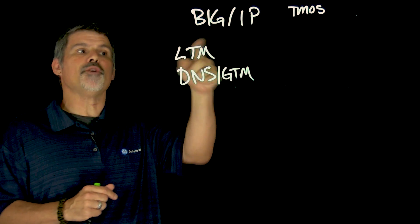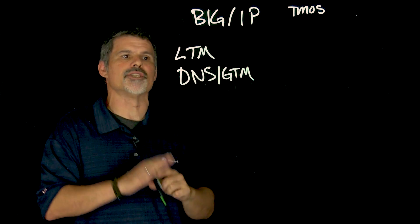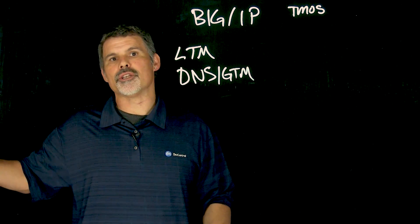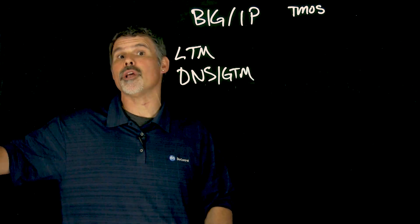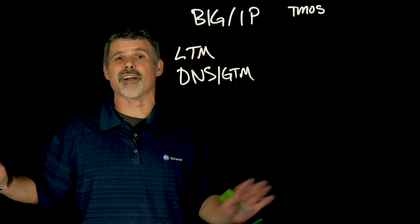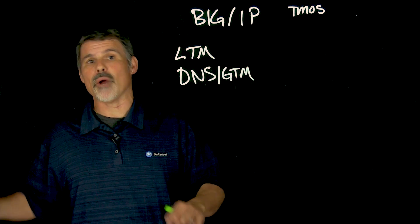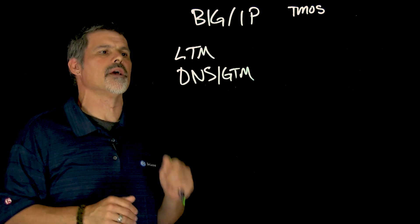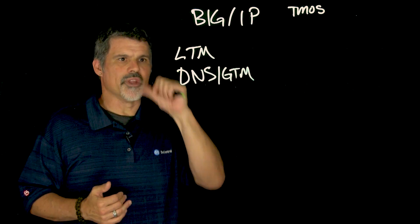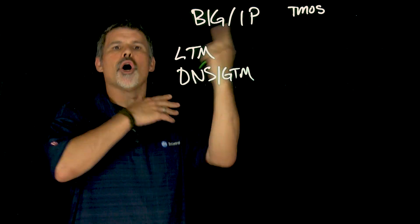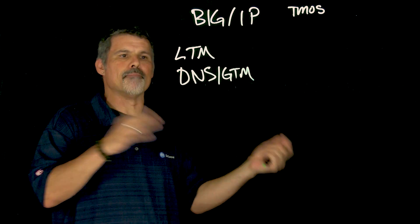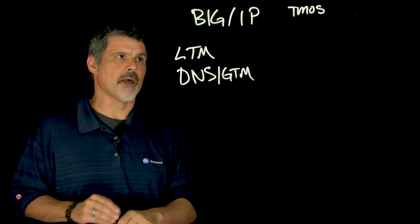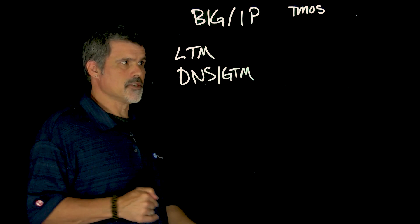DNS also communicates with LTM — they work in conjunction. LTM will tell DNS when the resources in a data center are not performing well, so traffic can be directed somewhere else. That's how they work together: global traffic management and, more importantly, your DNS, which is critically important these days.